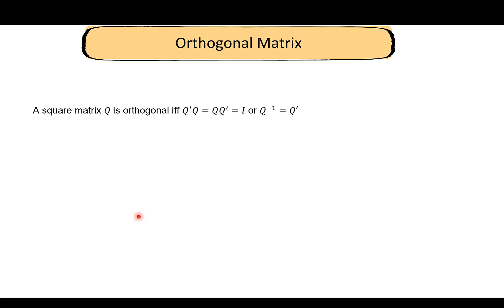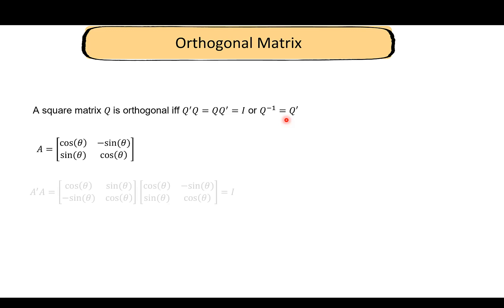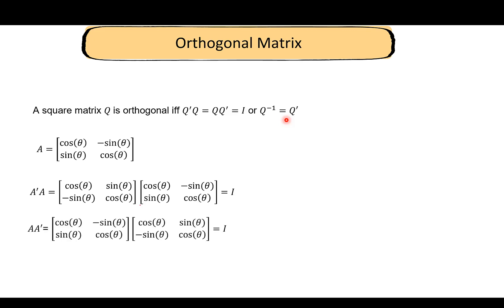Next, let's look at orthogonal matrices. A square matrix Q is orthogonal if and only if Q^T·Q = Q·Q^T = I. This also means that the inverse of Q is simply Q^T — that is an important implication of orthogonality. You can verify this with a concrete example by computing A^T·A and A·A^T and confirming both equal the identity.